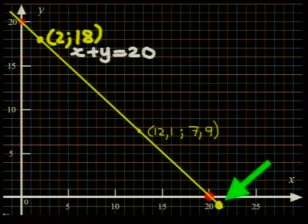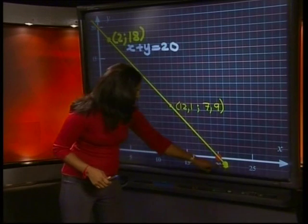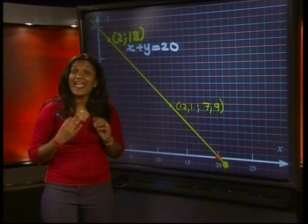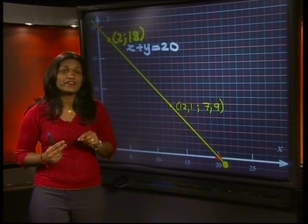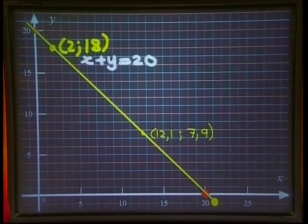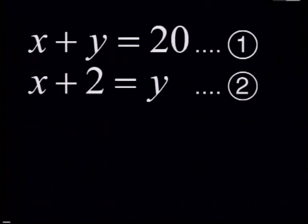What about this point here — do you think that it is a solution? This point is not a possible solution because it has a negative Y value. We know that X and Y represent ages. Liz or Mpo cannot be negative one years old, of course not. So we know that this line has to end at the intercepts. We need to solve these two equations simultaneously, dealing with them together by drawing them both on the same Cartesian plane.